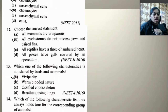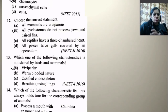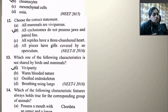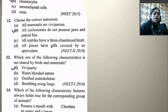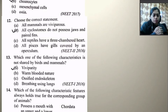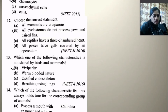In poriferans, the spongocoel is lined with flagellated cells called choanocytes, not oscula, mesenchymal cells, or ostia — the right option is choanocyte. Next: Choose the correct statement. All cyclostomes do not possess jaws and paired fins — this is correct. All reptiles do not have a three-chambered heart (crocodile is an exception). All Osteichthyes gills are covered by an operculum — this is wrong because chondrichthyes do not have an operculum.